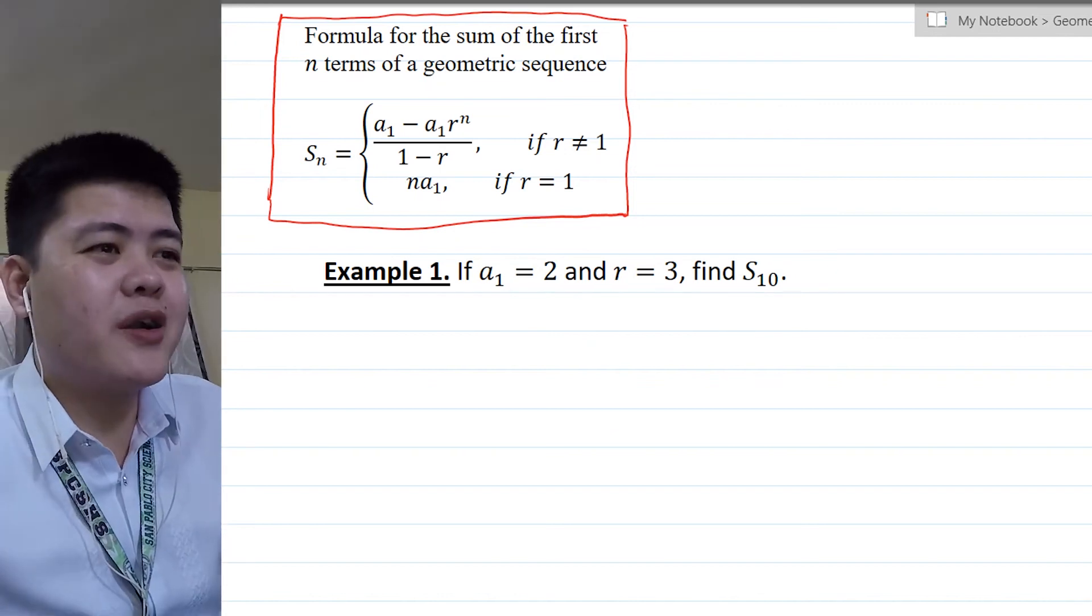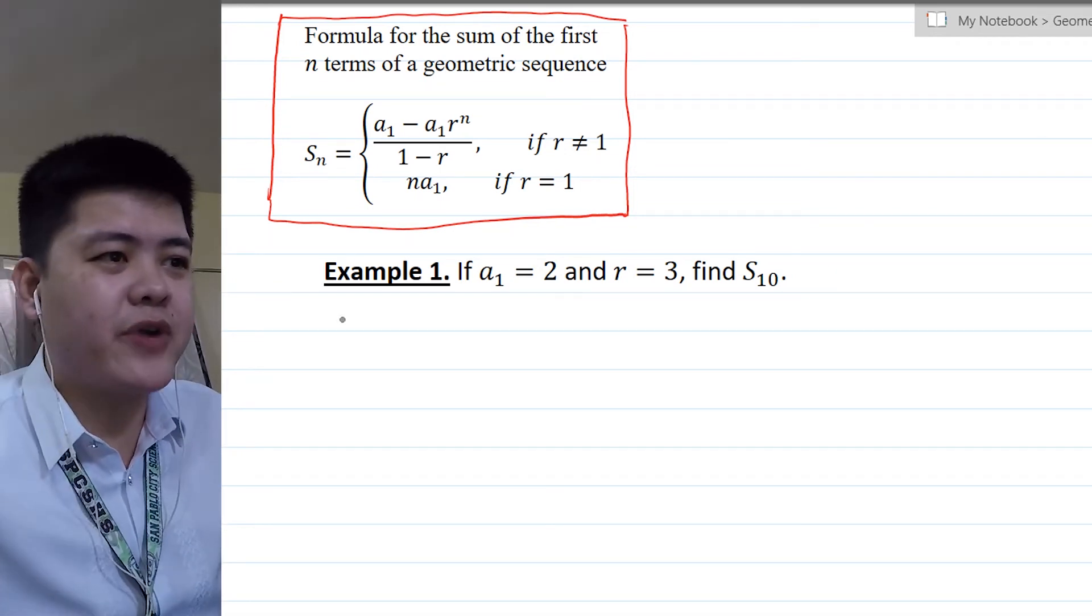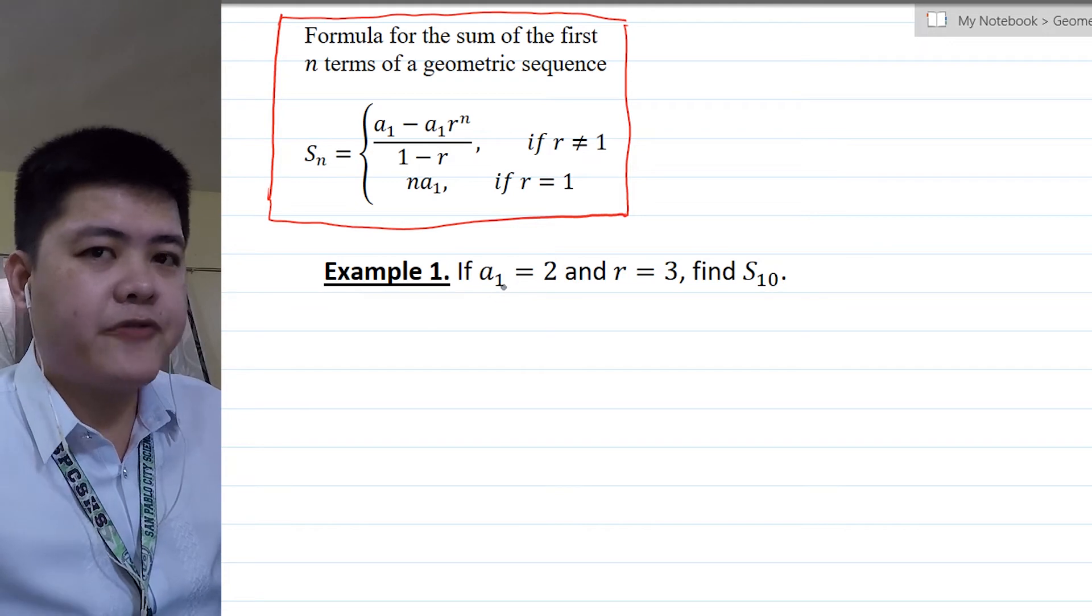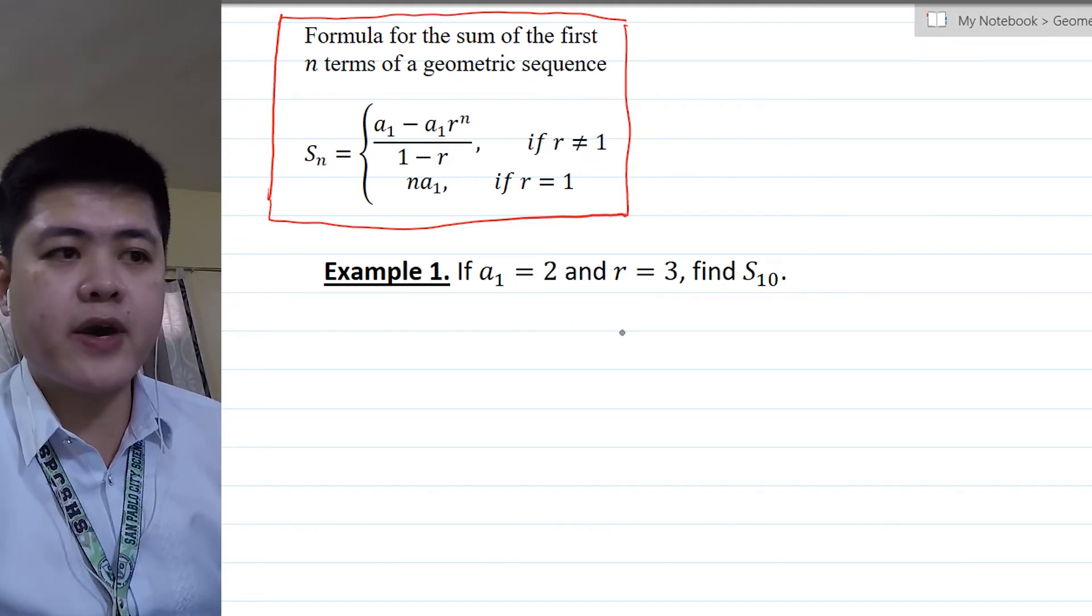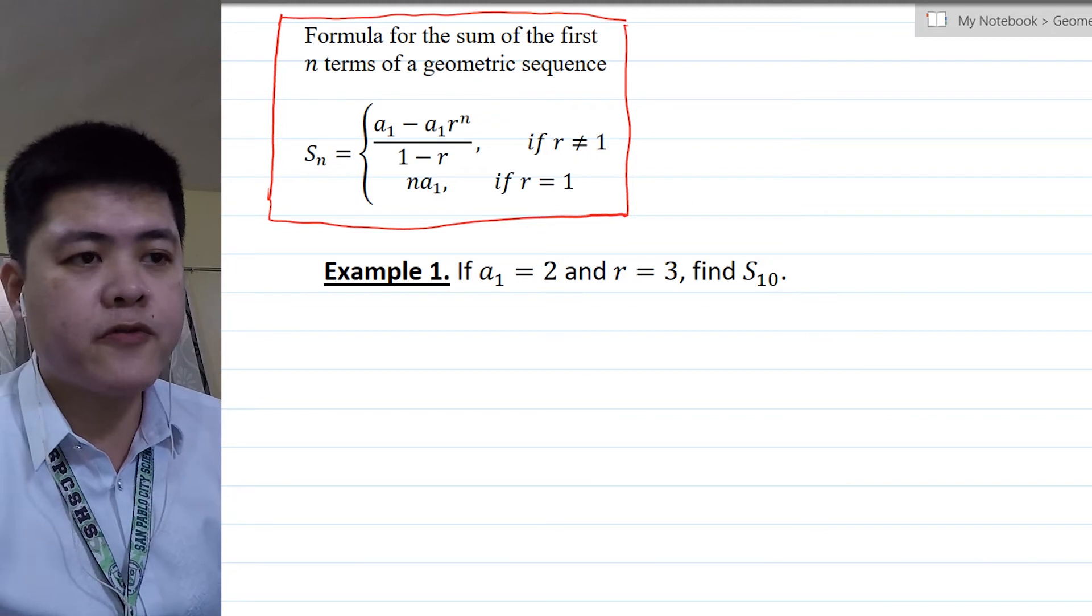So let's have examples for geometric series. For example number 1, we have the first term is 2, the common ratio is 3, and we're going to look for S of 10.